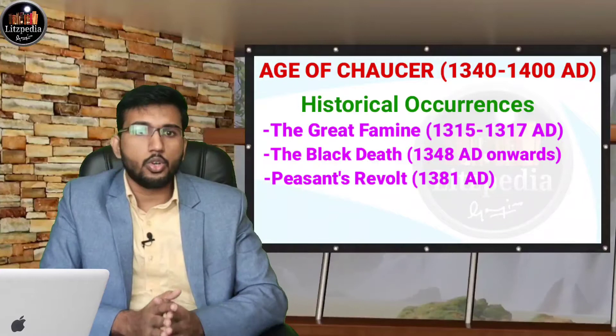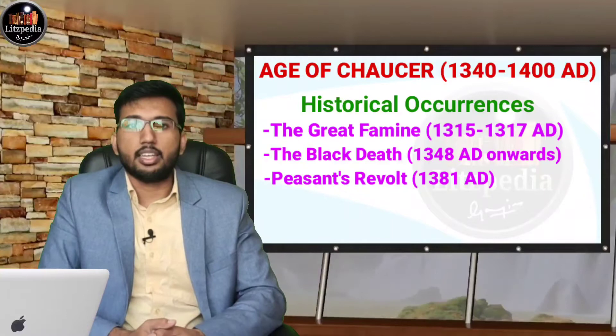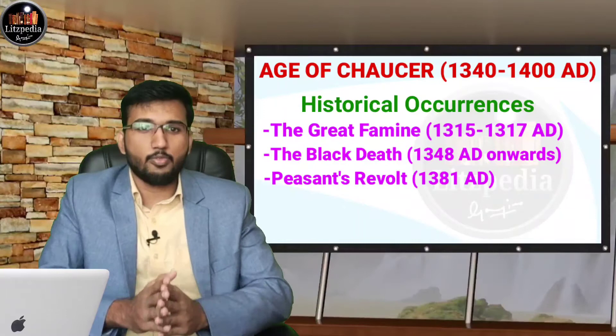Violence spread throughout the country during that time, and the revolt was led by Wat Tyler and John Ball. These are the three interconnected historical events we discussed: the Great Famine, the Black Death, and the Peasants' Revolt.